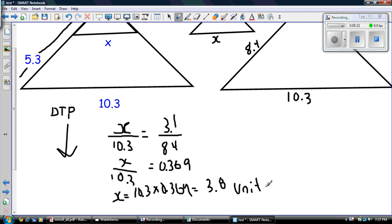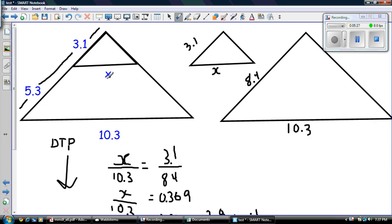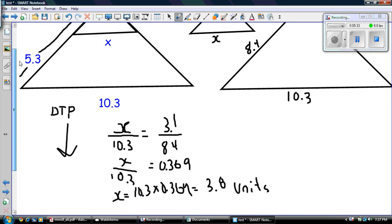And we're done. So the length of this side right here in our triangle is 3.8 units. So that seems reasonable, because this side is 3.1. They're roughly the same length there. So this X is 3.8 units.